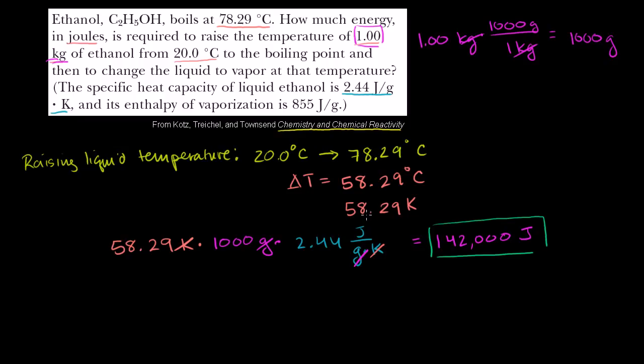We have to add the heat of vaporization, or the enthalpy of vaporization, which they tell us is 855 joules per gram. This is how much energy you have to do to vaporize a certain amount, per gram of ethanol. Assuming that it's already at the temperature of vaporization, how much extra energy per gram do you have to add to actually make it vaporize? So we have this much, and we know we have 1,000 grams of ethanol. 855 times 1,000 is 855,000 joules. So it actually took a lot less energy to make the ethanol go from 20 degrees Celsius to 78.29 degrees Celsius than it took to stay at 78.29, but go from the liquid form to the vapor form.